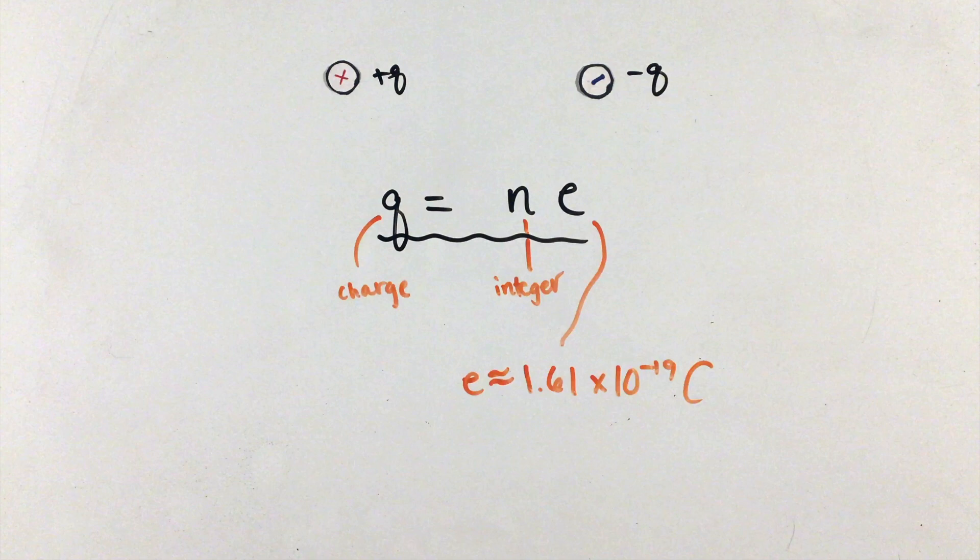Finally, like mass, charge in object interactions is conserved. This means that if two objects that allow charges to move freely, or objects called conductors, are placed in contact with one another, the total charge of the two objects must stay the same.